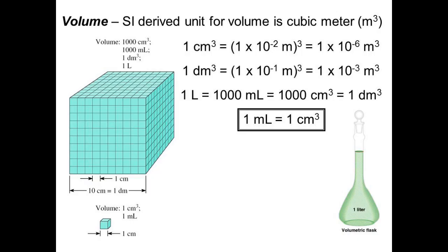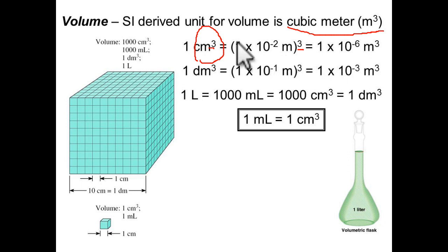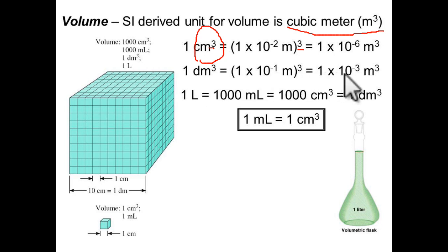You must know how to change units. For example, converting 1 cm³ to cubic meters: since the exponent is 3, we multiply the conversion factor 3 times. We know 1 cm = 1×10⁻² m, so 1 cm³ = 1×10⁻⁶ m³. Also remember: 1 liter is equivalent to 1,000 cm³. These are the standard conversion units.